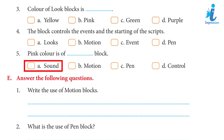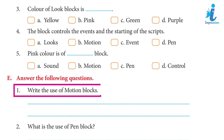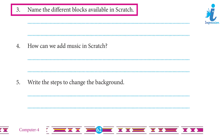Answer the following questions. 1. Write the use of motion blocks — Answer: Motion blocks are used to direct the sprite's movement on stage. 2. What is the use of the pen block? — Answer: The pen block is present as an extension to Scratch 3.0. 3. Name the different blocks available in Scratch — Answer: The different blocks available in Scratch are Sound block, Motion block, Control block, Events block, and Pen block.